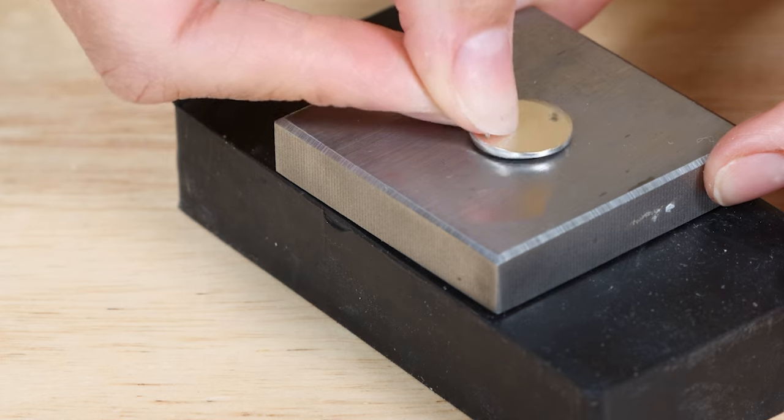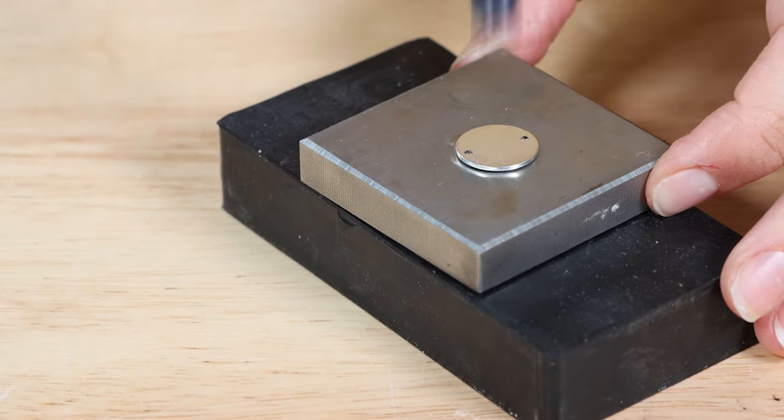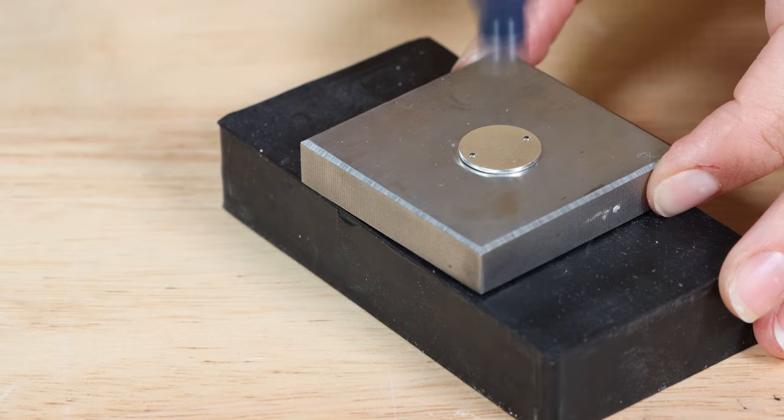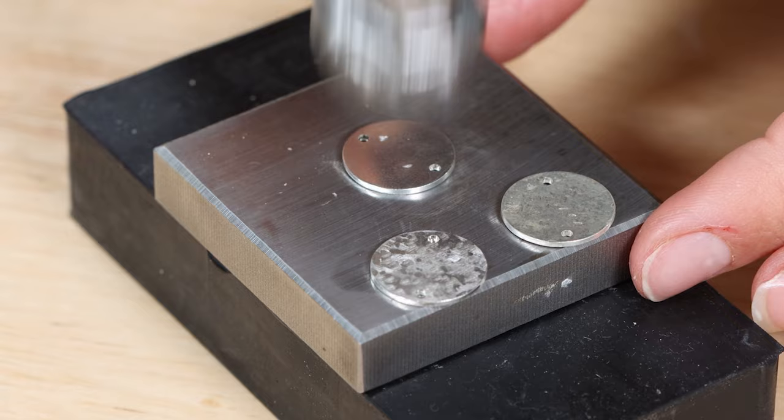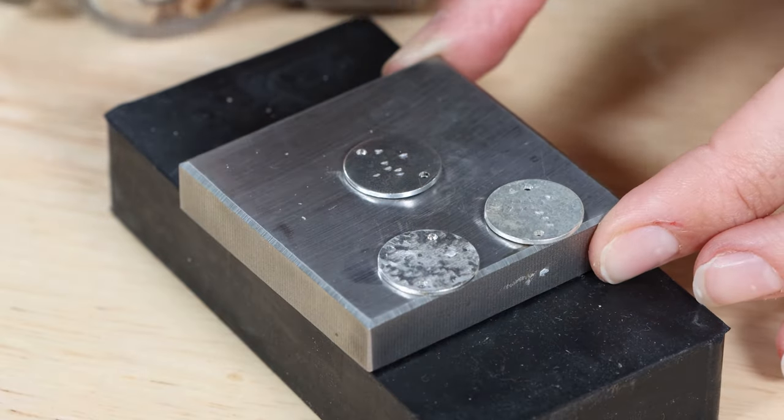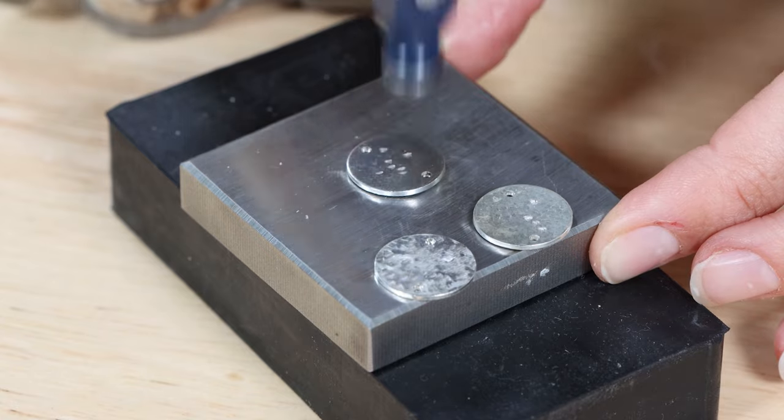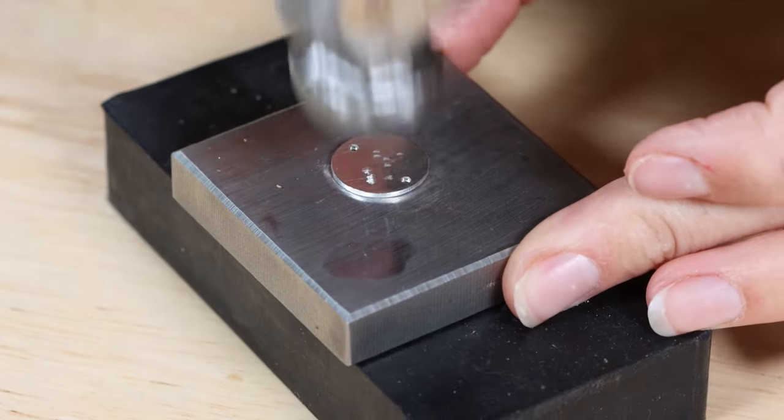Place the silver disc on a steel block and use a craft hammer or ball peen hammer to hit the surface of the disc to add texture. Turn the disc over and texture the reverse of the disc too. You may want to stick the disc down on the steel block with double sided tape. Repeat this and texture all three discs.